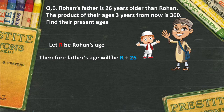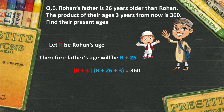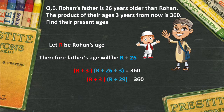We are also told that the product of their ages — three years from now — is 360. Three years from now, Rohan's age will be r plus 3. Father, whose age is r plus 26, will also grow three years more, so it becomes r plus 26 plus 3, which is r plus 29. Multiplying both ages three years from now gives: (r plus 3)(r plus 29) equals 360.